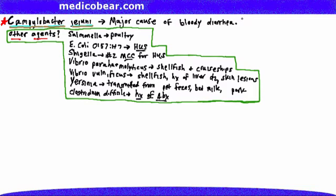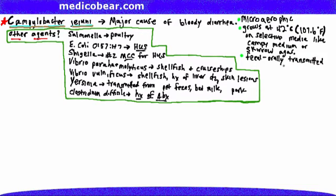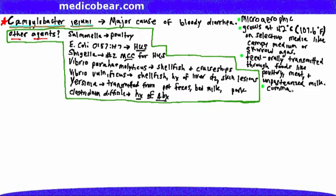Campylobacter jejuni is microaerophilic and grows at the high temperature of 42 degrees Celsius, equivalent to about 107.6 degrees Fahrenheit. It grows on selective media like Campy medium or Skirrow agar. It is fecal-orally transmitted through foods like poultry, meat, and unpasteurized milk. A defining feature is that it appears comma- or S-shaped under the microscope. It is also oxidase positive and gram negative.